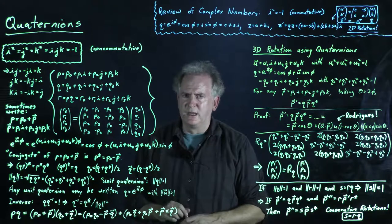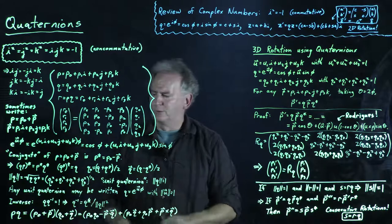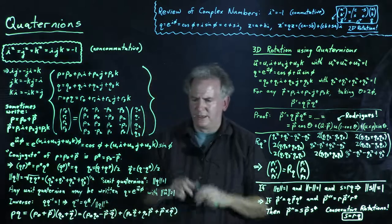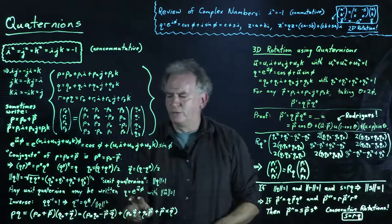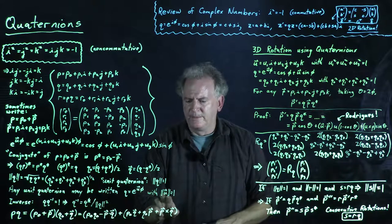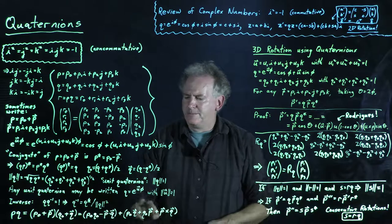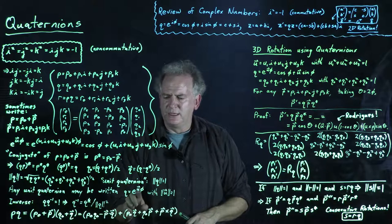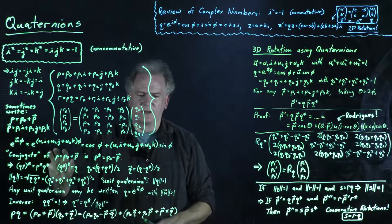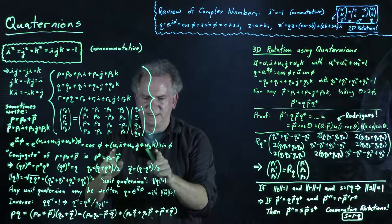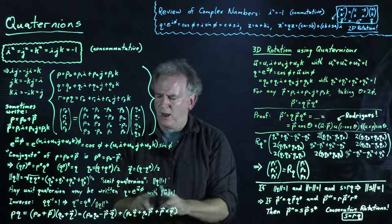A unit quaternion is one where the square root of the sum of the squares of all components equals one. Any quaternion satisfying ‖q‖ = 1 may be written as q = e^(u⃗φ) for some unit vector u⃗ with ‖u⃗‖ = 1 — that is, u₁² + u₂² + u₃² = 1. So any unit quaternion can be written as q = cos φ + u⃗ sin φ, since cos²φ + sin²φ = 1.